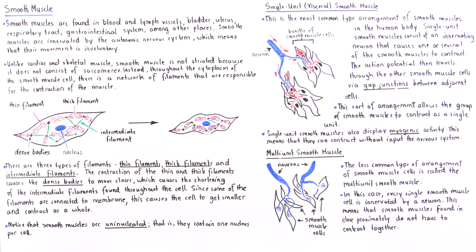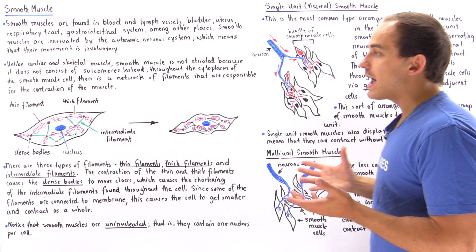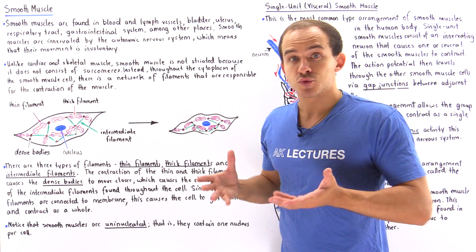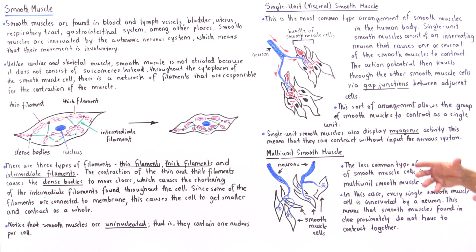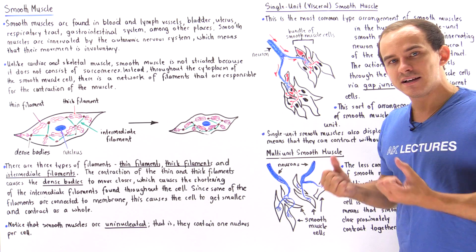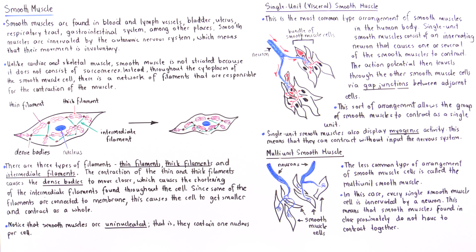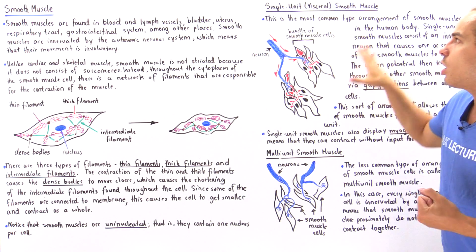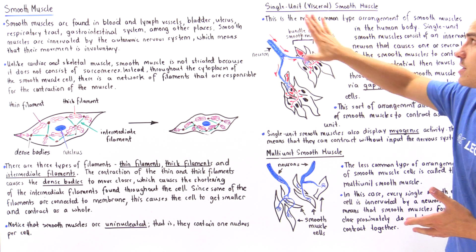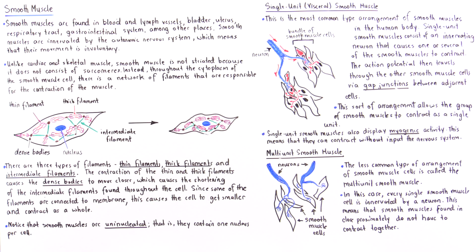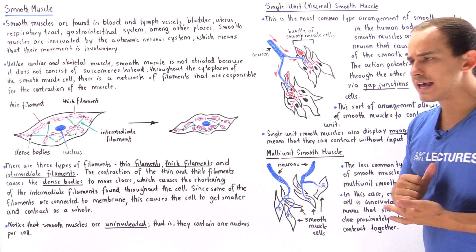Single unit smooth muscles are found in places like the uterus — when a woman gives birth, the uterus must contract as a single unit. Other locations include the stomach, the small intestine, the bladder, as well as small arteries and veins.